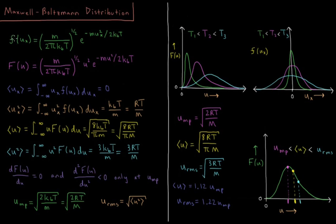If we look at the distribution of speeds of a particle in an ideal gas moving in, for example, the x-dimension, the most likely speed is at 0 meters per second because it's equally likely to be moving to the left or to the right. So on average, it's going to be 0 in the x. If we look at what this probability is, we notice that it ends up being a Gaussian function.